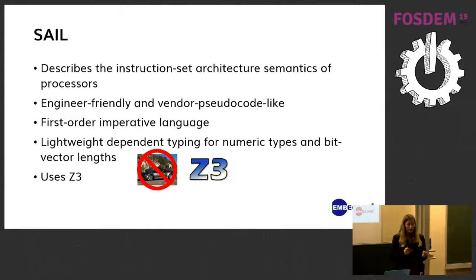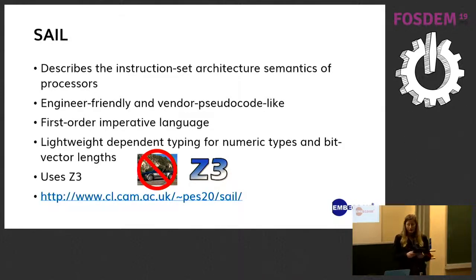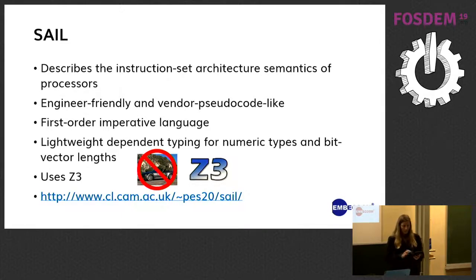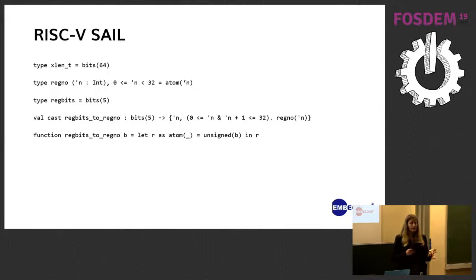SAIL has been used for several papers available from the University of Cambridge SAIL website. Given a SAIL definition, the tool will check it and generate executable emulators in C and OCaml, theorem prover definitions for Isabelle and HOL4, and definitions to integrate with the WEM tool for concurrency semantics. To introduce the features in more detail, I will now go through a simple RV64i example.